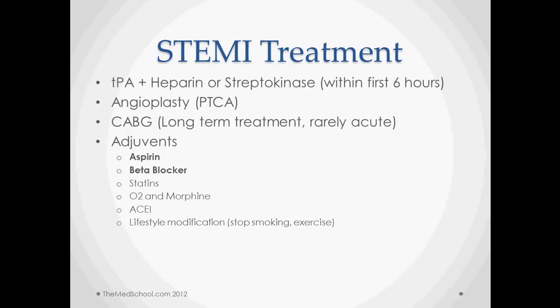Statins are used to control lipid levels and may have a separate effect on inflammatory processes — that may be one of the reasons they help decrease mortality, though those studies are still ongoing. Give oxygen and morphine especially for pain. ACE inhibitors help prevent remodeling, which is good for heart muscle. And of course these patients need to stop smoking and should probably do some exercise.